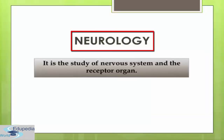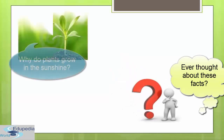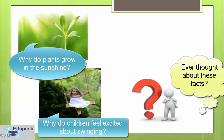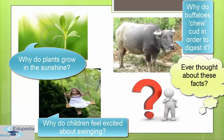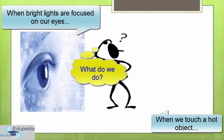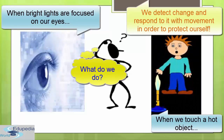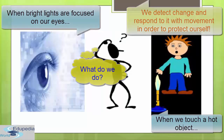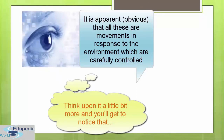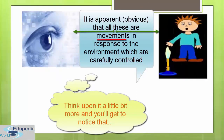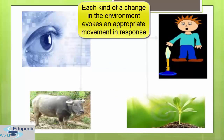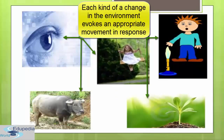Neurology is the study of nervous system and the receptor organs. Have you ever wondered why plants grow into sunshine? Children try to get pleasure and fun out of swinging? Buffaloes chew cud to help break tough food so as to digest it? When bright light is focused on our eyes or when we touch a hot object, we detect the change and respond to it with movement in order to protect ourselves. All this is movement in response to the environment and they are carefully controlled.